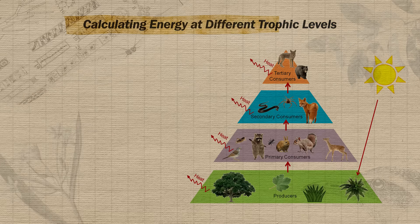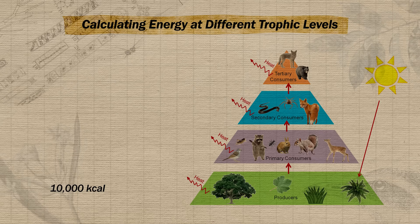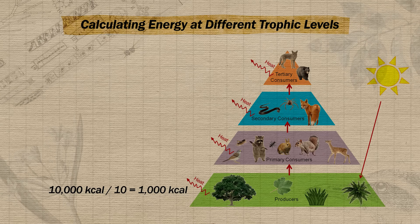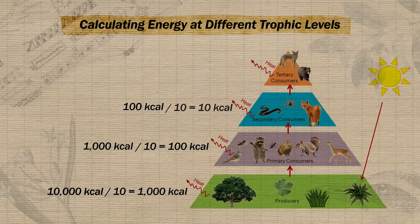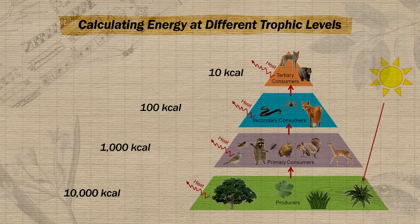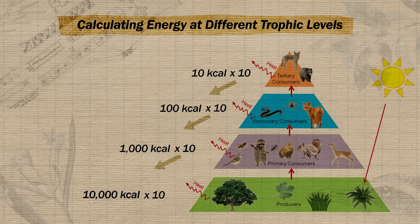Another type of calculation from unit one is finding energy or biomass availability at different trophic levels using the rule of 10 — simply multiplying or dividing by 10. If you have 10,000 kilocalories at the producer level, dividing by 10 gives 1,000 kilocalories at the primary consumer level, 100 at the secondary consumer level, and 10 at the tertiary consumer level. To move down the pyramid, multiply by 10. The same process applies when working with biomass instead of energy.